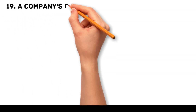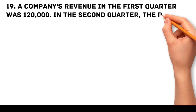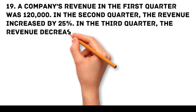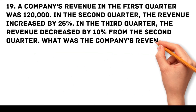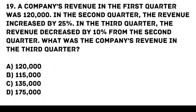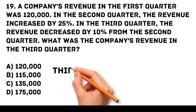Question 19. A company's revenue in the first quarter was 120,000 pesos. In the second quarter, the revenue increased by 25%. In the third quarter, the revenue decreased by 10% from the second quarter. What was the company's revenue in the third quarter? A. 120,000 pesos. B. 115,000 pesos. C. 135,000 pesos. D. 175,000 pesos. Answer: C. 135,000 pesos.